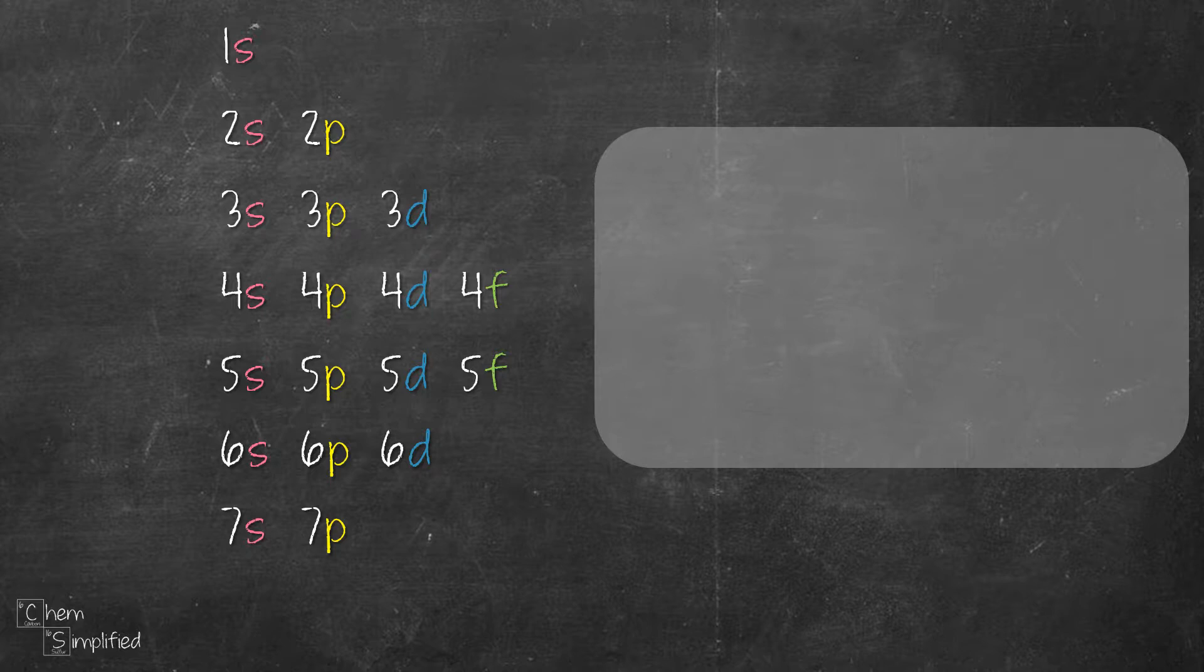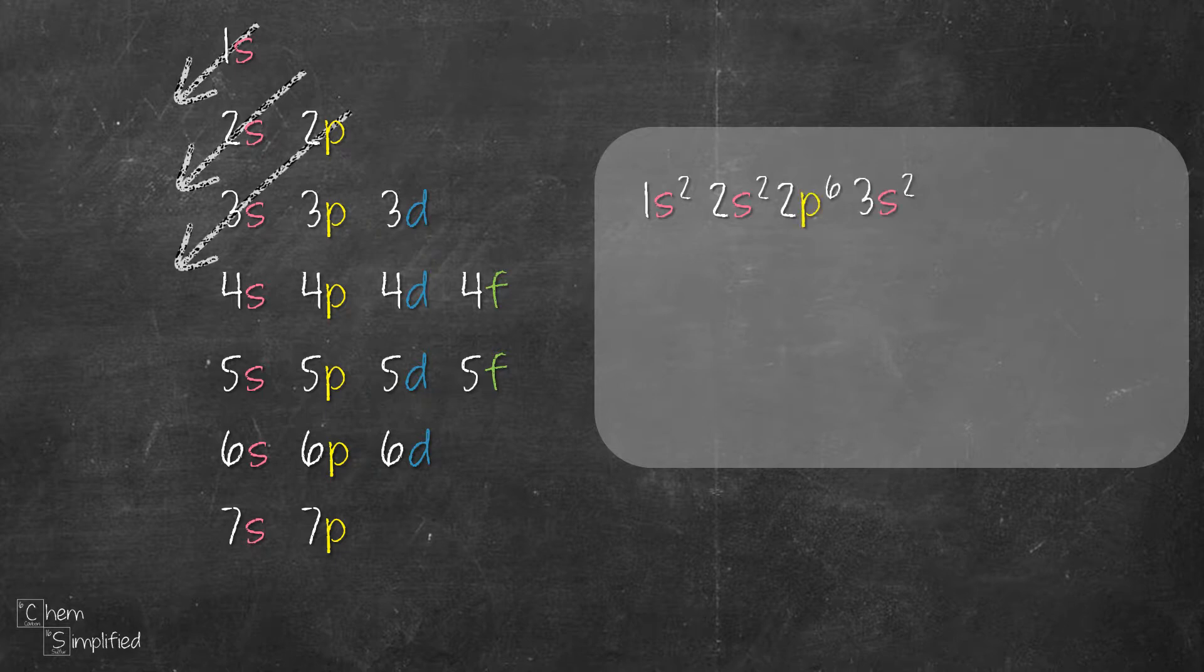The first arrow goes through one S. S orbital can hold a maximum of two electrons, right? So we'll write one S and then we put a two electrons there. The second arrow goes through two S. Same thing, S holds two electrons, so we have two S two. The third arrow goes through two P and then only three S. So we write two P six, three S two. Notice all the S orbitals will have two electrons. P orbital will have six. And then we go on and on all the way until we reach the end.